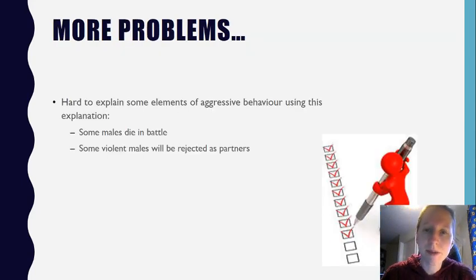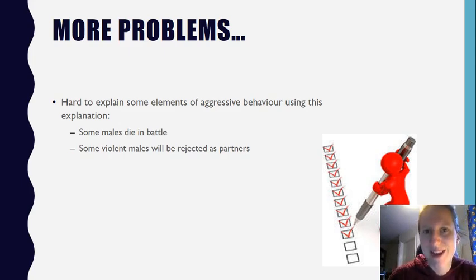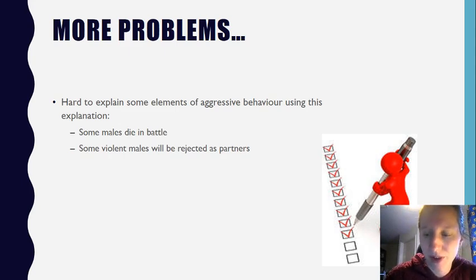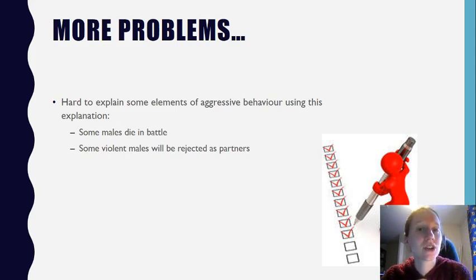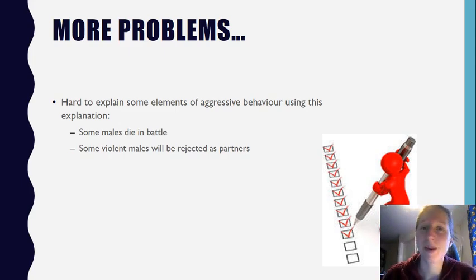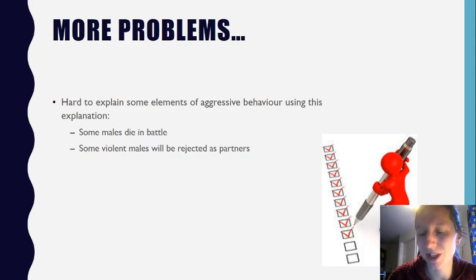There are also elements of aggressive behaviour that are hard to explain using this theory. As mentioned in the last video, some males die in battle — that's obviously not adaptive because they're not surviving and not passing on their genes if they die before fathering a child. Additionally, some violent males will be rejected as partners, as touched on with the ethological explanation. Females may be scared, and violence may not be an attractive feature — something the evolutionary explanation is not able to explain.